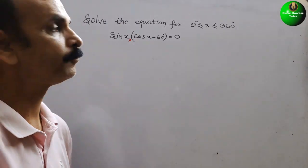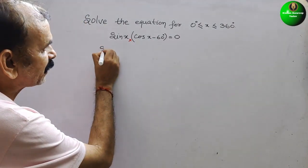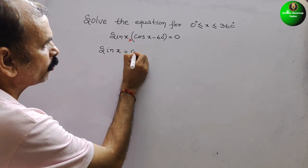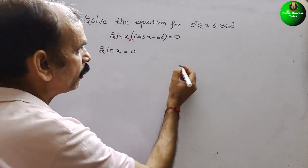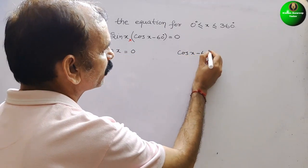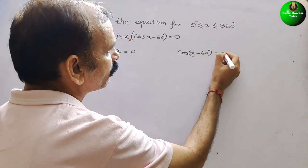That only we have to write. So we can say sin x is equal to 0 or cos(x - 60°) is equal to 0.